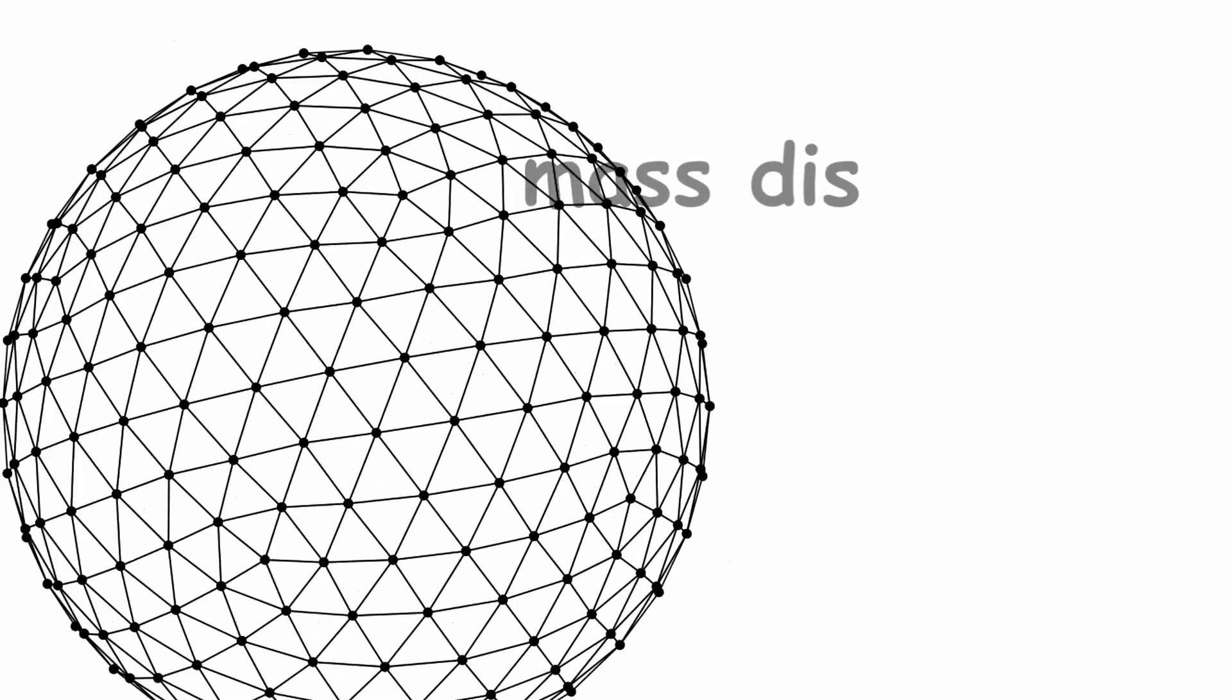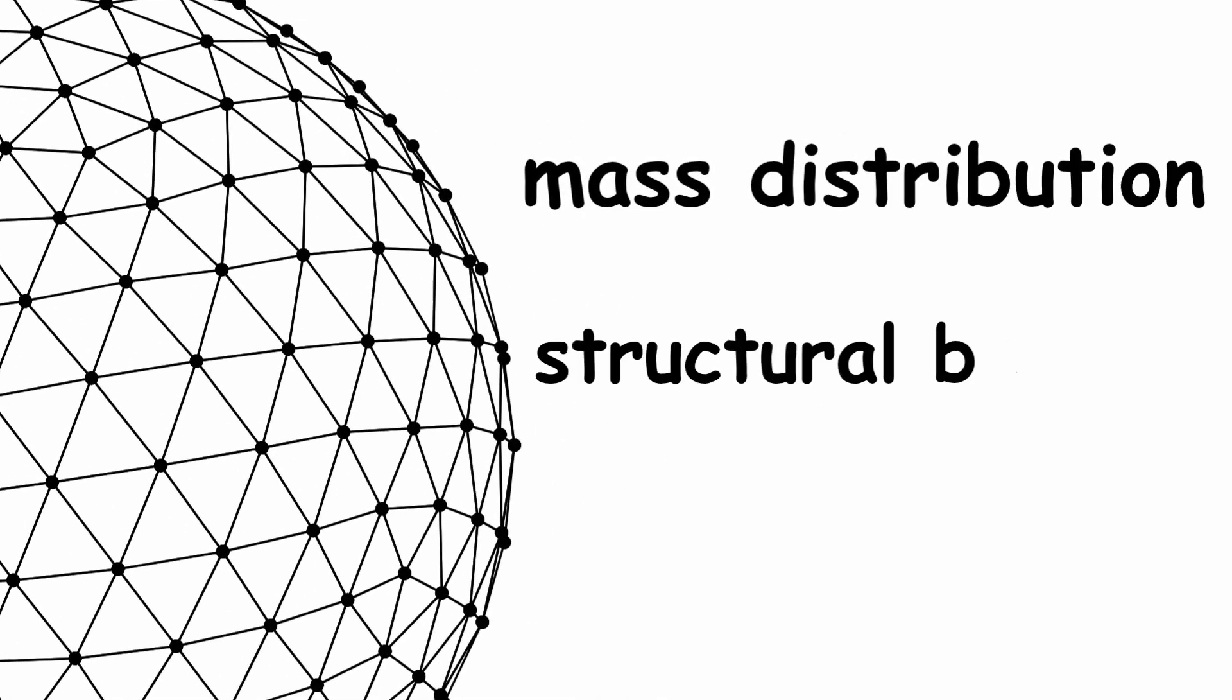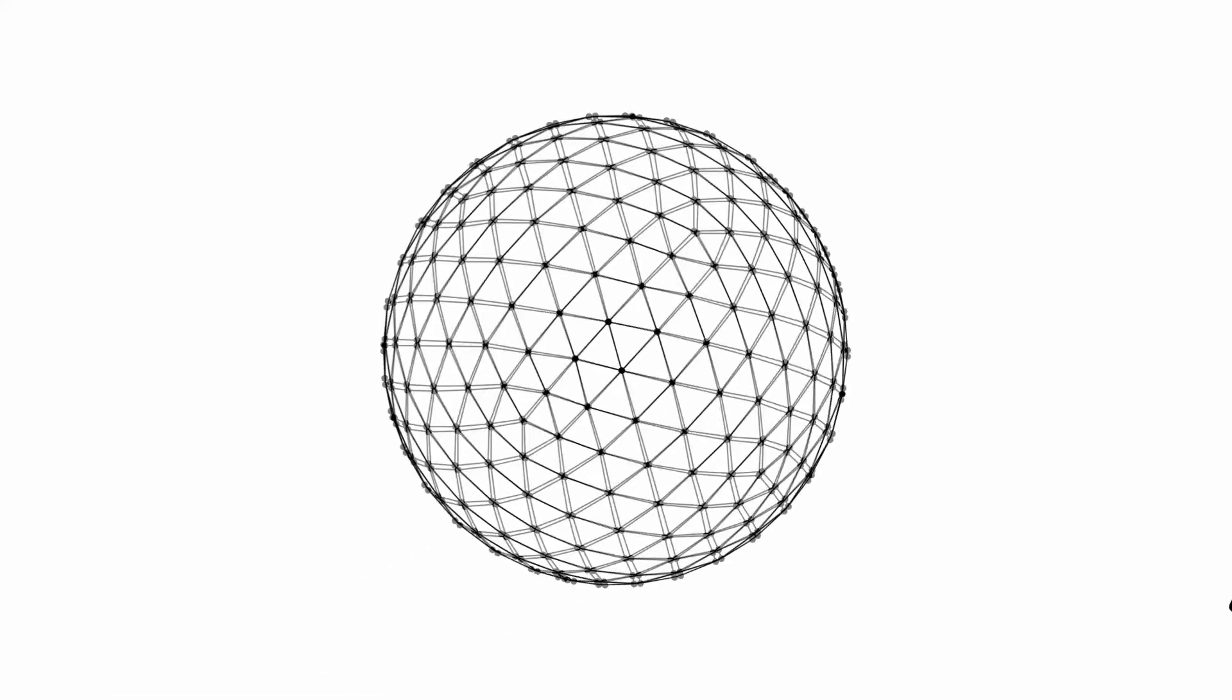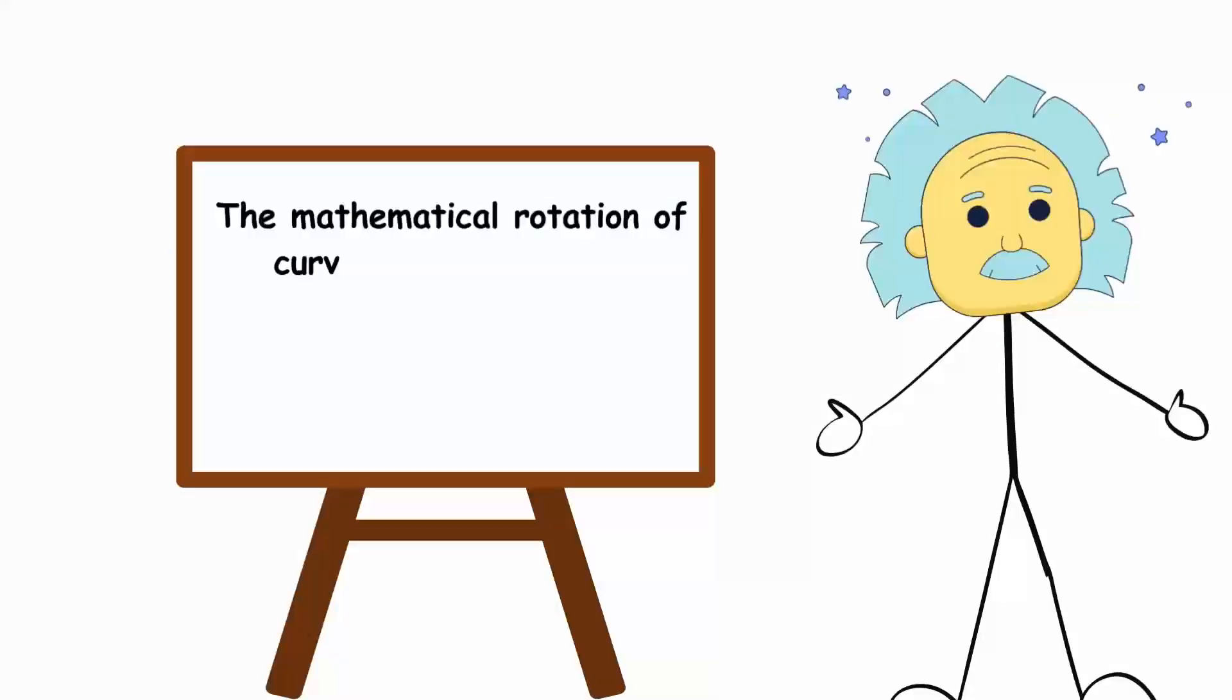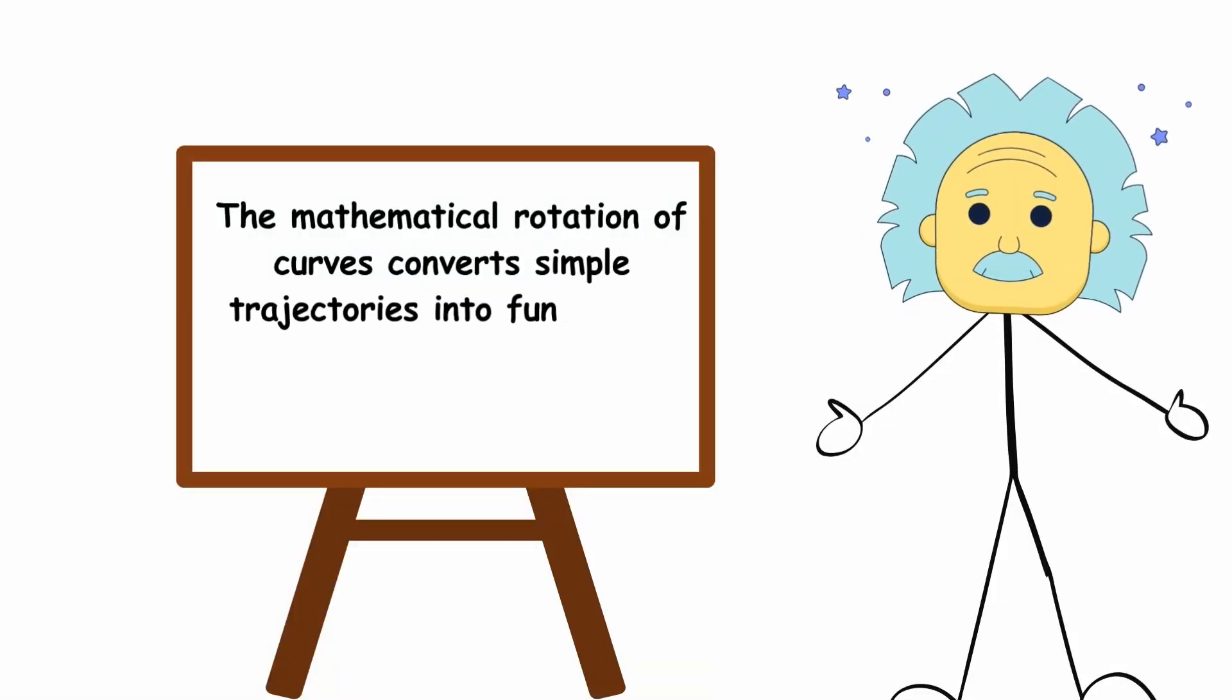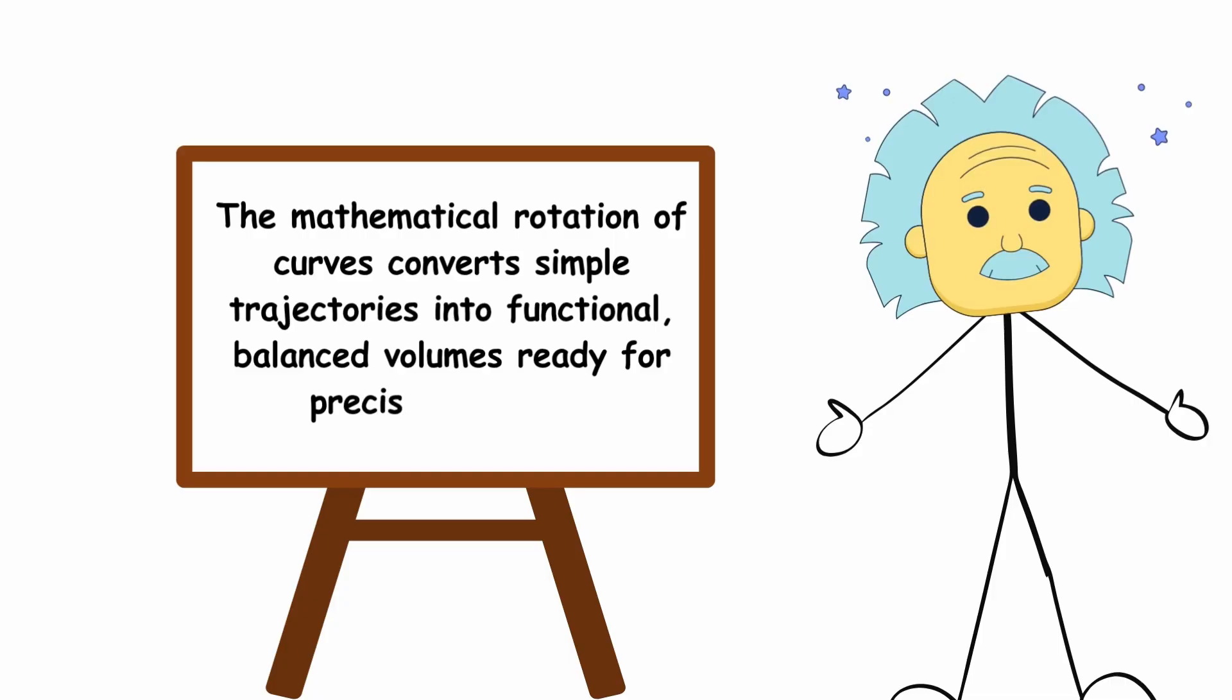They also allow for controlling mass distribution and structural balance, essential for moving or centered parts. The mathematical rotation of curves converts simple trajectories into functional, balanced volumes, ready for precision printing.